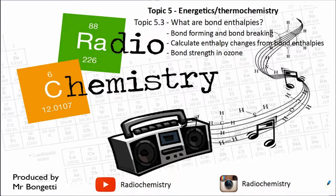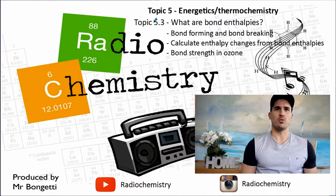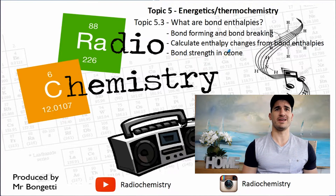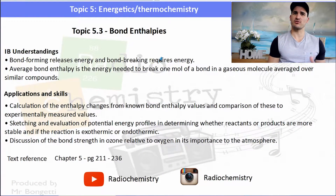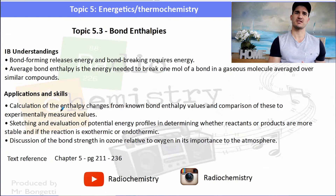Welcome to another video. This is still topic 5, volume number 6, and the last one in the topic 5 series. This is the one where we look at bond enthalpies — make sure you have your calculator and your data book. Topic 5.3 covers bond enthalpies: bond forming and breaking, calculations, and bond strength in ozone. The IB understandings focus around bond enthalpy, its use in calculations, and explaining bond strength in ozone and oxygen in the atmosphere.